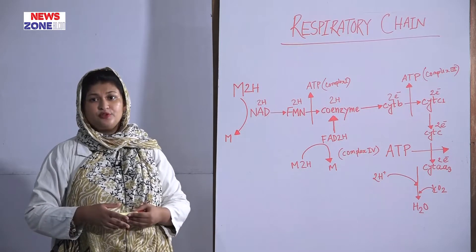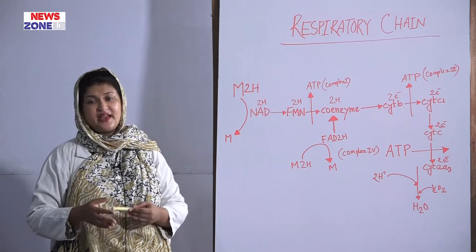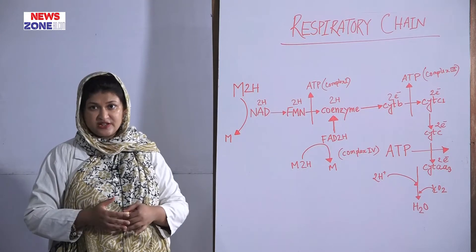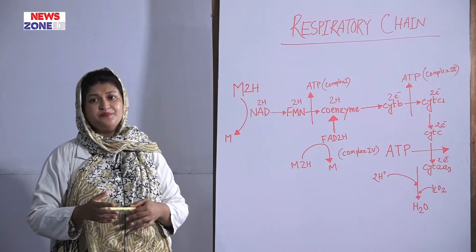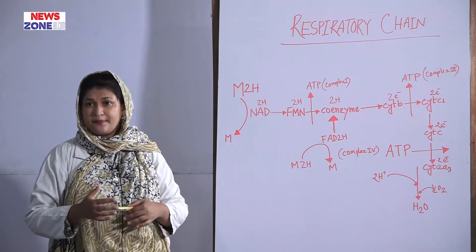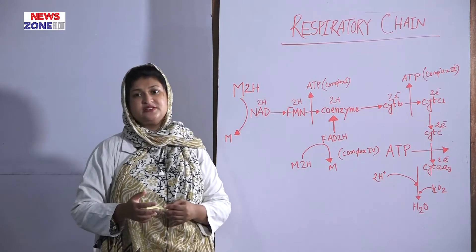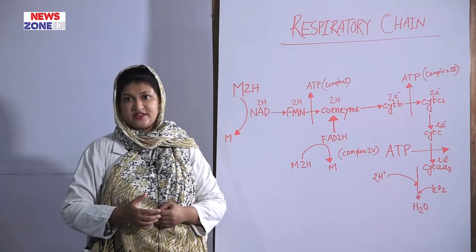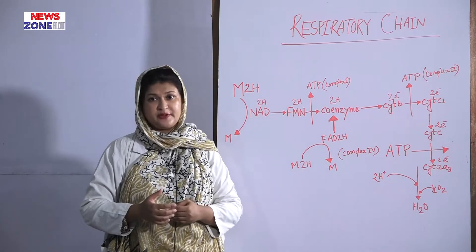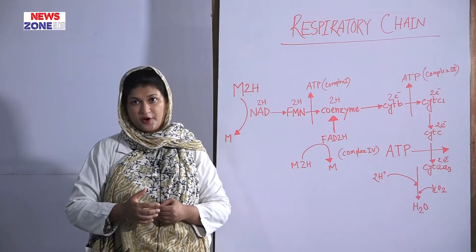The rate-limiting enzymes for the respiratory chain are cytochrome oxidase and ATP synthase. The main purpose of the respiratory chain is oxidation of the reduced coenzyme and formation of ATP, which is the main energy currency for our body.